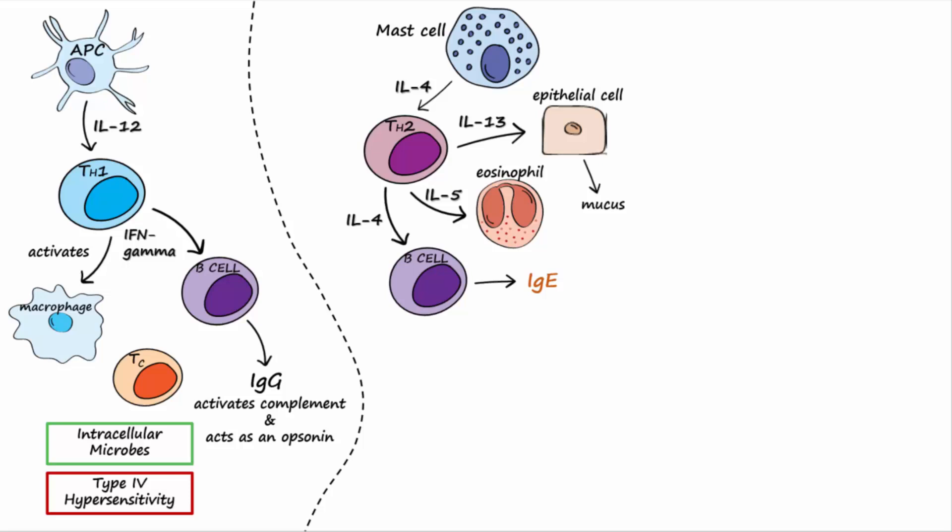Helper T2 cells are important for immunity against large multicellular pathogens like parasites, including helminths, and are predominant in allergies. Atopic individuals that are prone to allergies have a greater helper T2 to T1 ratio and therefore higher amounts of IgE. Overactivation of helper T2 is involved in type 1 hypersensitivity.